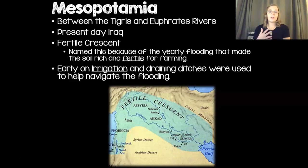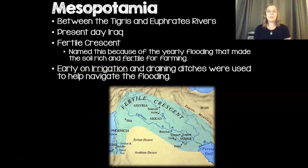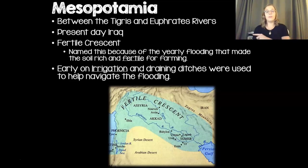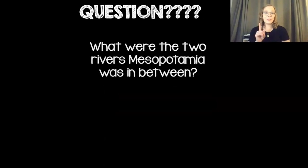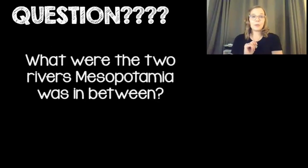Early on, one thing that becomes very important in Mesopotamia is something called irrigation. Irrigation is a vocabulary word for this unit and it just means basically taking water from one place to another. This was done by digging ditches used to drain water from the river and take it where you wanted it to go. We still do this today. Irrigation is a very big development for the advancement of agriculture and farming.